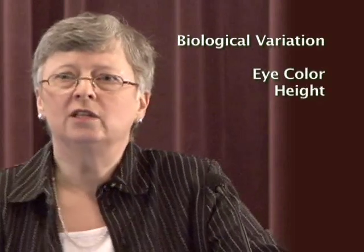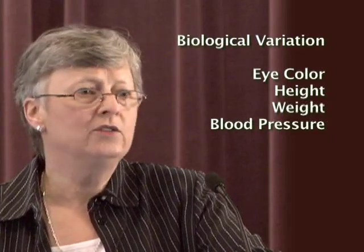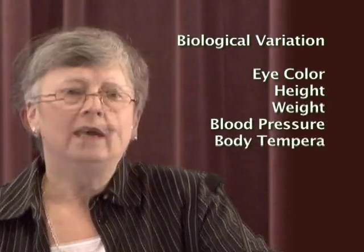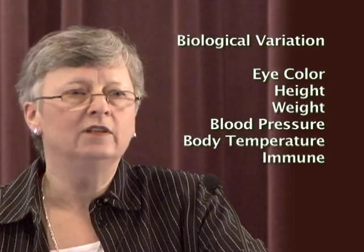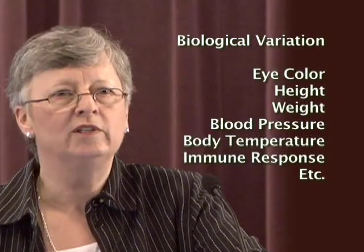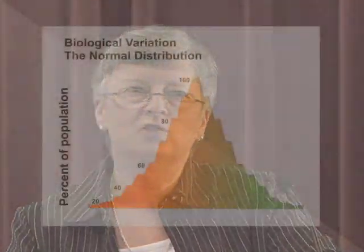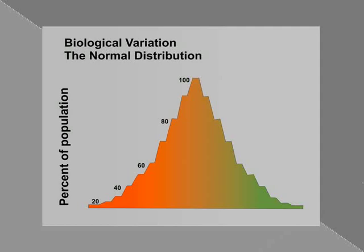Biological variation can be seen in almost any characteristic that you wish to point out — characteristics like your eye color, your height, weight, your blood pressure. All kinds of characteristics follow a distribution. Not all of us have exactly the same temperature. If we took everybody's temperature right now, it would not be 98.6 — that's the average. There would be some above, some below, and if we plotted all of those data, we would find what's called a normal distribution. You can see a normal distribution for almost any biological characteristic you wish to measure.